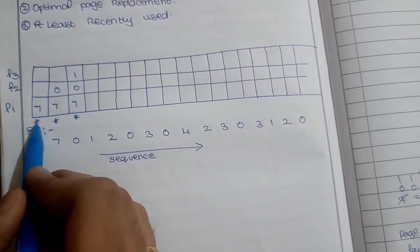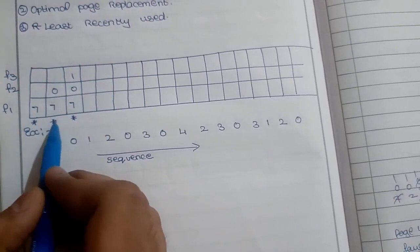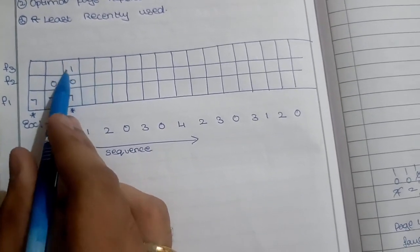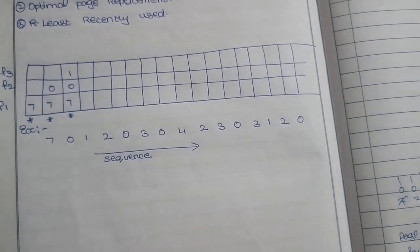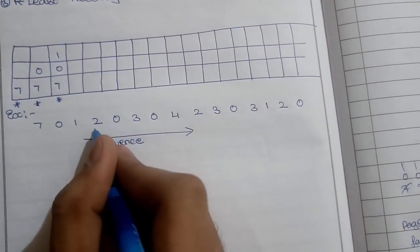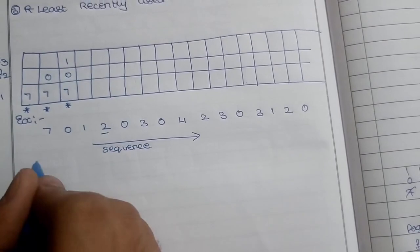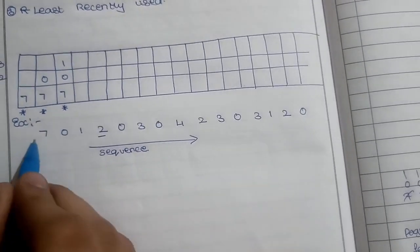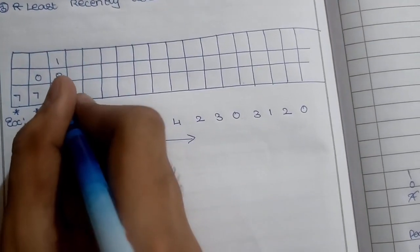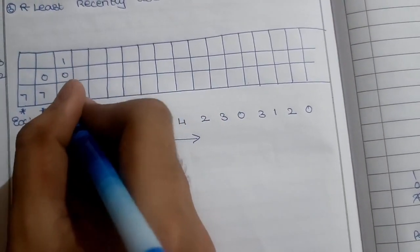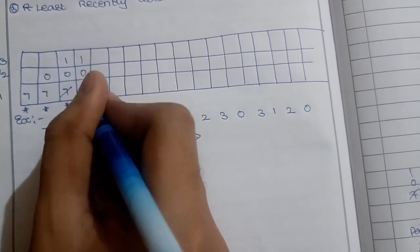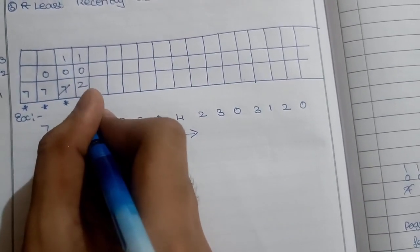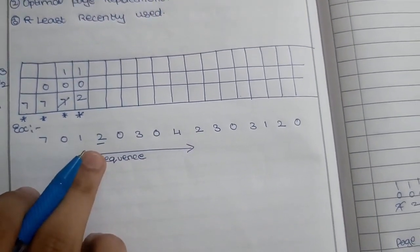Let me show you with an example. We have reference sequence and frames. I'll start marking the references. The first reference is 7, so this is a fault. I'll accommodate the first frame as 7, then 0. All these are faults because initially frames are empty. Now I need to delete and add new frames.